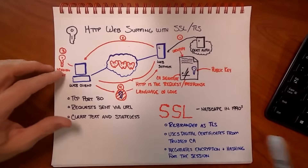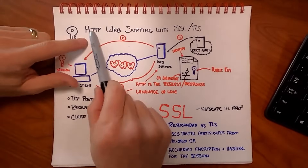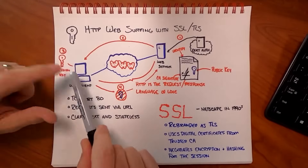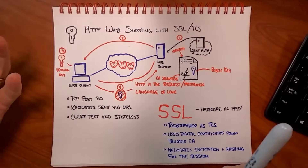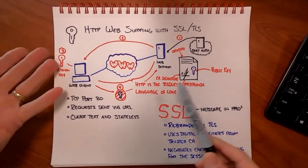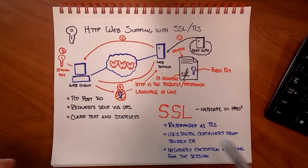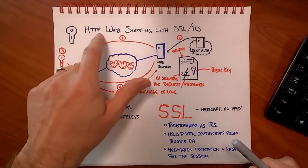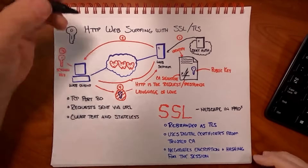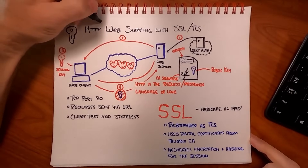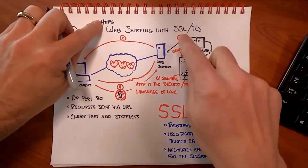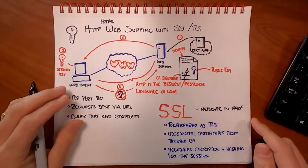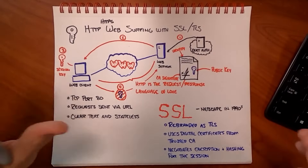So we just talked about typical HTTP: this guy sends a request, this guy sends a response, done. It's all clear text, stateless, all that kind of stuff. So what if we wanted to use HTTPS, which is really HTTP with SSL/TLS on top of it?